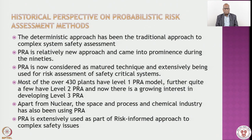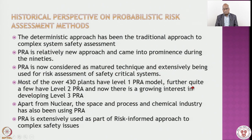Even so, three major accidents have happened in the last 40 or so years, but every accident has given us a learning opportunity. New and modern system development and reduction in risk has been witnessed, and there is a consensus that the nuclear industry is the safest industry. Most of the 430 plants have a level 1 PRA model, and some plants have even a level 2 PRA model. We will go into detail on what level 1 and level 2 mean in the coming slides.